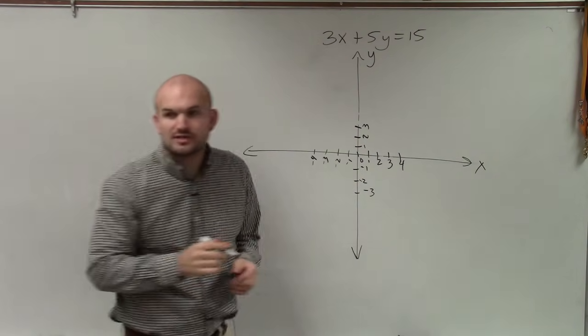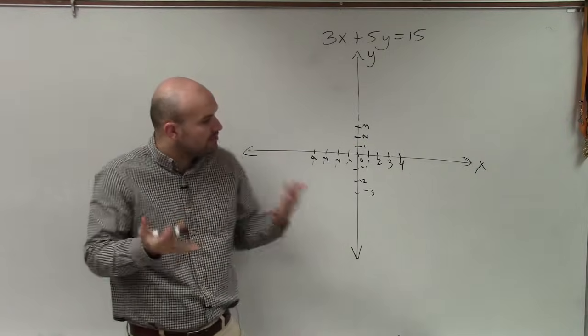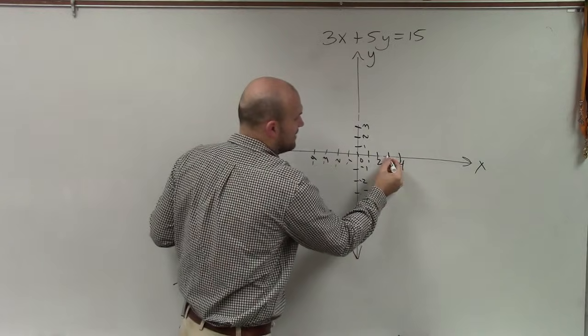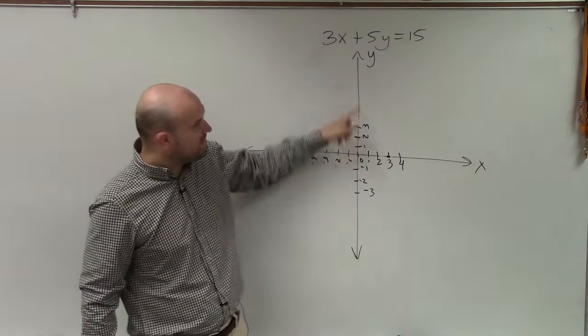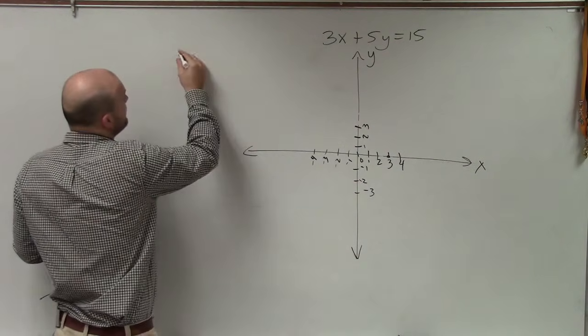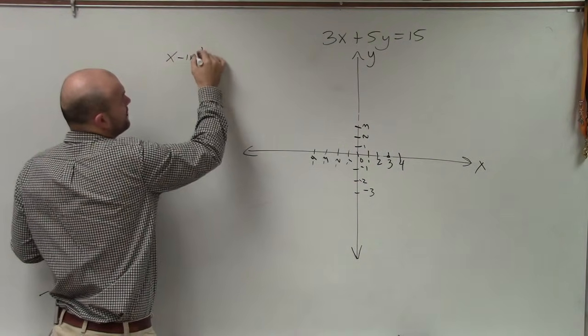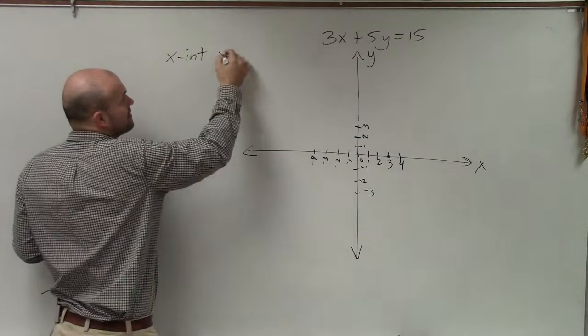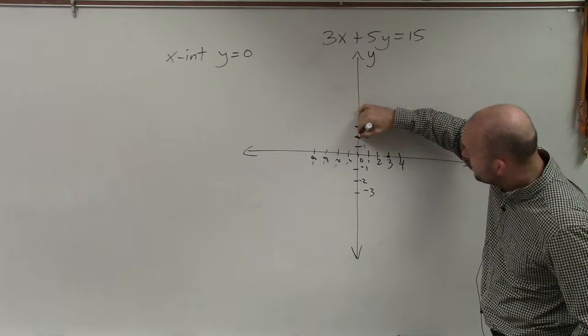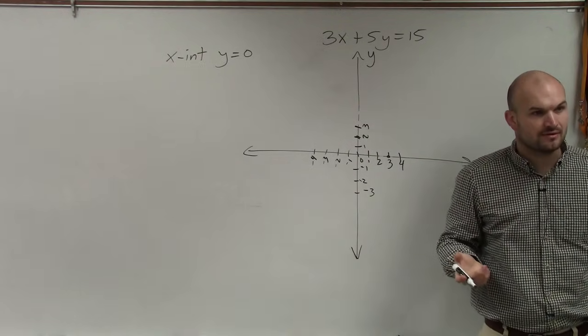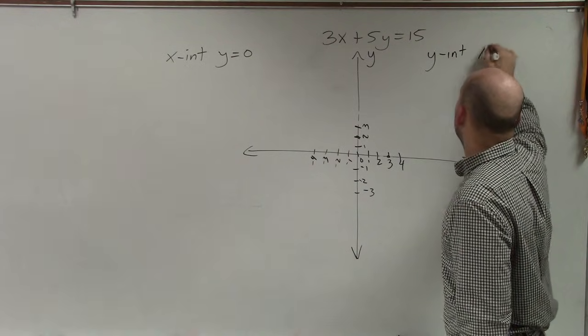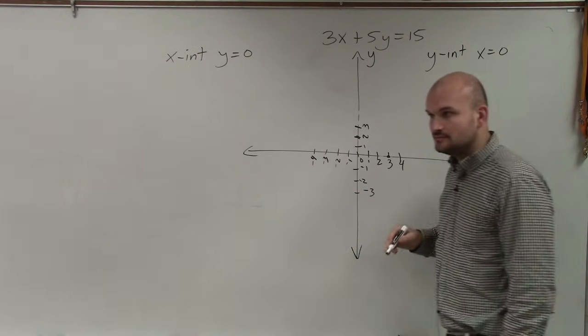So what I want you to understand, and what's so important about this, is when there is a point on the x-axis, what is the y value of that point? Zero. So we can say at the x-intercept, when a point lies on the x-intercept, y is equal to 0. And in the same respect, when there's a point on the y-axis, what is the x value? Zero. So for the y-intercept, x equals 0.